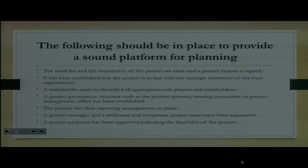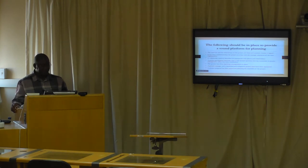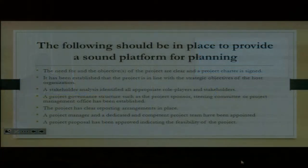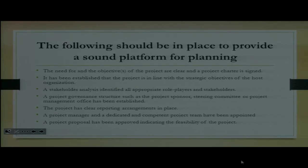Number three: a stakeholder analysis has identified all appropriate role players and stakeholders. A project governance structure such as the project sponsor, steering committee, or project management office has been established. The project has clear reporting arrangements, and a project manager and dedicated, competent project team have been appointed. A project proposal has been approved indicating the feasibility of the project — you cannot start planning unless it has been approved as feasible.